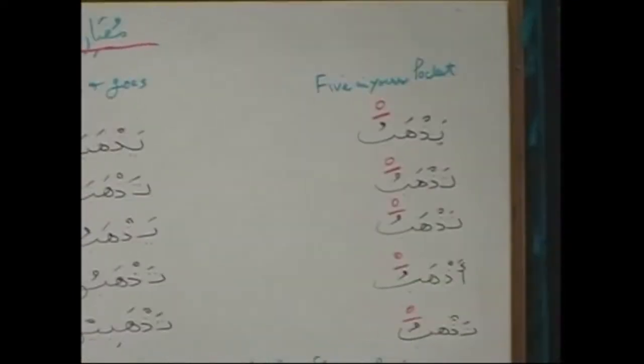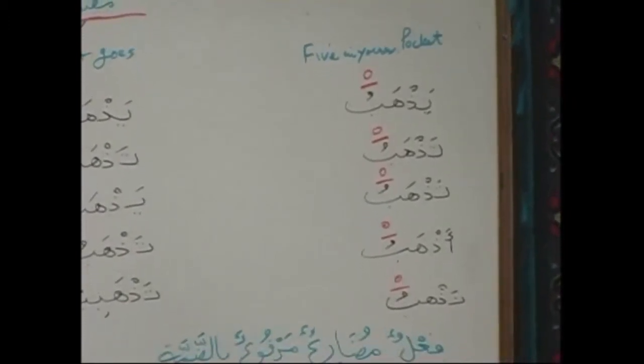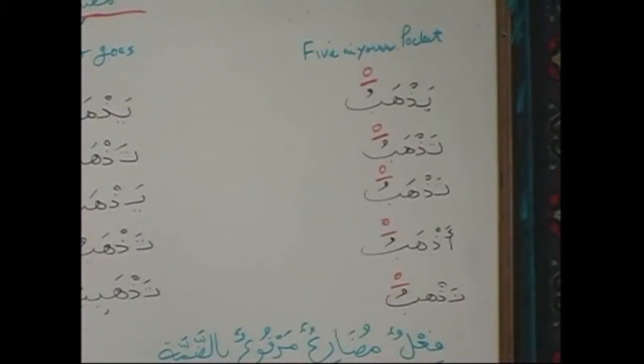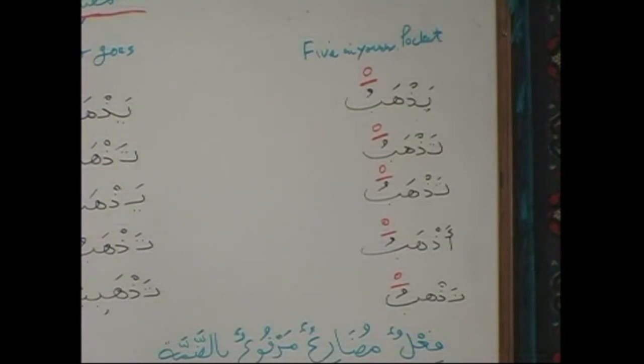Then we have the last section, which is mabni. We are only doing marfu now, but I am preparing you for mansoob and majzoom. The five in your pocket is very easy because you will see the sign. When you see dhamma, you say: fe'elun mudaryun marfuun bidhamma. When it becomes mansoob, that dhamma changes to fatah — fe'elun mudaryun mansubun bid fatah. When it becomes majzoom, you will see sukoon — fe'elun mudaryun majzoomun bid sukoon.